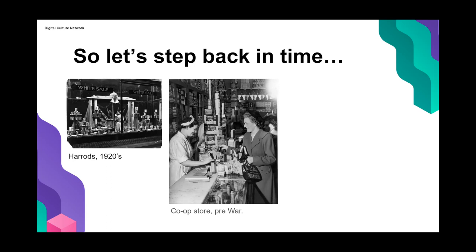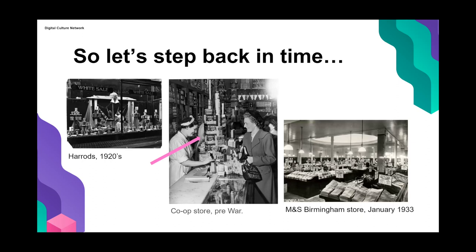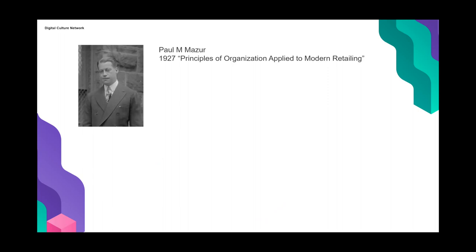Here's Marks and Spencer's store in Birmingham in the 1930s — lots of product arranged throughout the store, a 'pile them high' approach, with lots of lighting and thought going into how products were laid out and displayed. So much thought went into these things that back in the 1920s people even wrote books about it — this guy Paul Mazur wrote 'Principles of Organization Applied to Modern Retailing.'